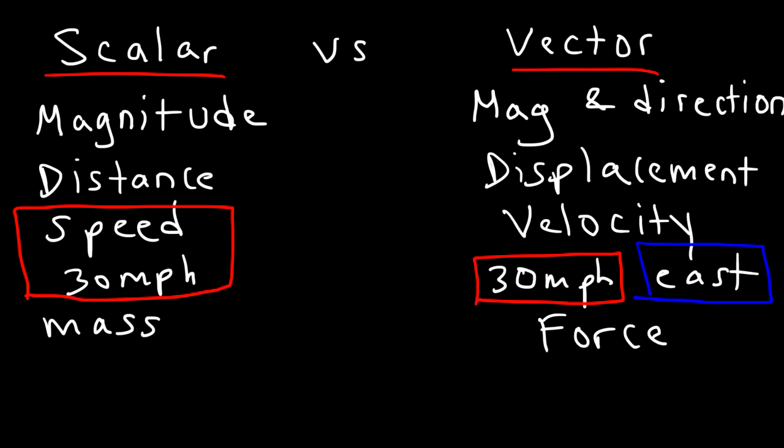How about temperature? Is temperature a scalar quantity, or is it a vector quantity? So can you have a temperature of, let's say, 90 degrees Fahrenheit east, or 100 degrees Celsius west? Direction is not part of temperature. There's no association. So therefore, temperature is a scalar quantity.